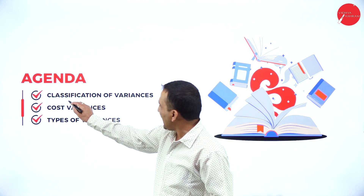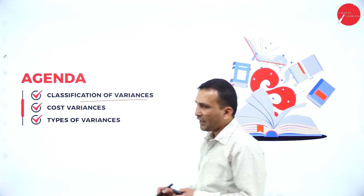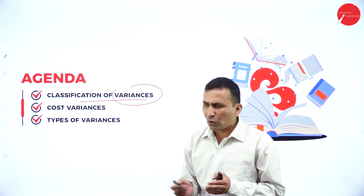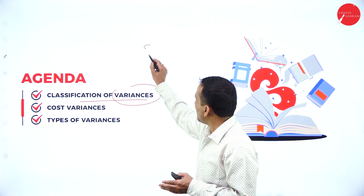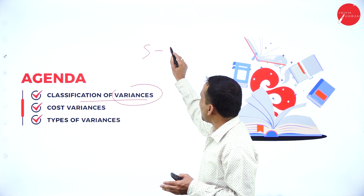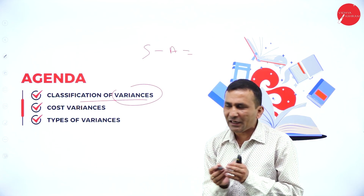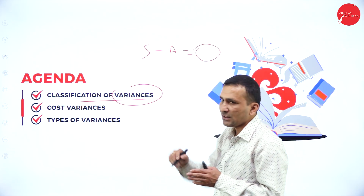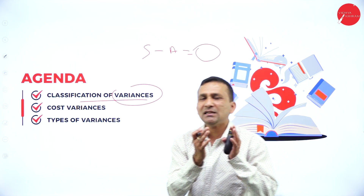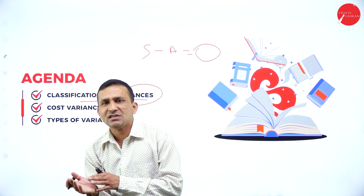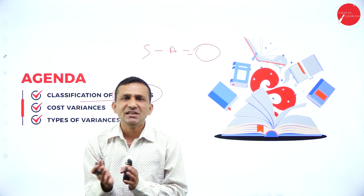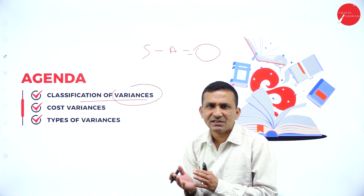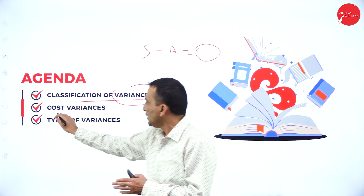The agenda is the classification of variance. The variance — how you get to know — is standard minus actual. Whatever difference we are getting, which is nothing but the variance. Either the variance is related to materials, labor, cost — there are different types.